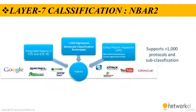NBAR2 is a deep inspection engine that can classify and identify a wide variety of protocols and applications using layer 3 to layer 7 data, including difficult-to-classify applications that dynamically assign TCP or UDP port numbers. NBAR2 can recognize more than 1000 applications, and monthly protocol packs are provided for recognition of new and emerging applications without requiring an IOS upgrade or router reload.